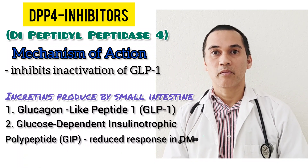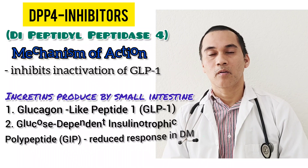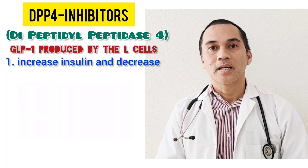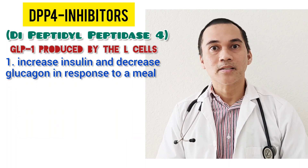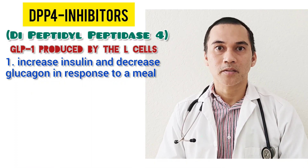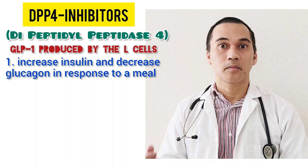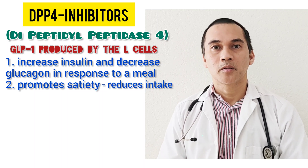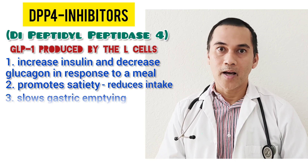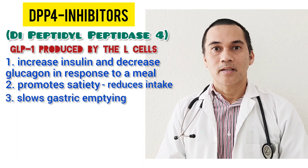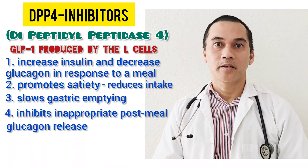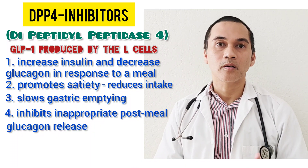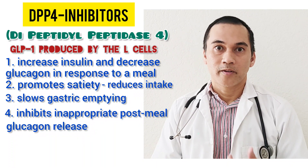When you are diabetic, your GIP responds less. So we will focus on the GLP-1, or glucagon-like peptide one. GLP-1 is produced by the L cells, and what it does is it stimulates insulin secretion from the pancreas and decreases glucagon in response to a meal. It also promotes satiety, which in turn reduces food intake, slows down gastric emptying, and inhibits inappropriate post-meal glucagon release by the liver — lowering blood sugar by increasing insulin and decreasing glucagon and sugar production by the liver.